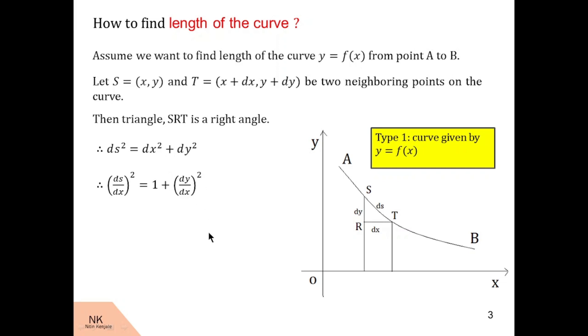Therefore, ds/dx equals the square root of 1 + (dy/dx)². From this equation, we can say length s of the arc from point A to point B is given by the integral of √(1 + (dy/dx)²) dx over the limit x₁ to x₂, where x₁ and x₂ are x-coordinates of point A and point B.